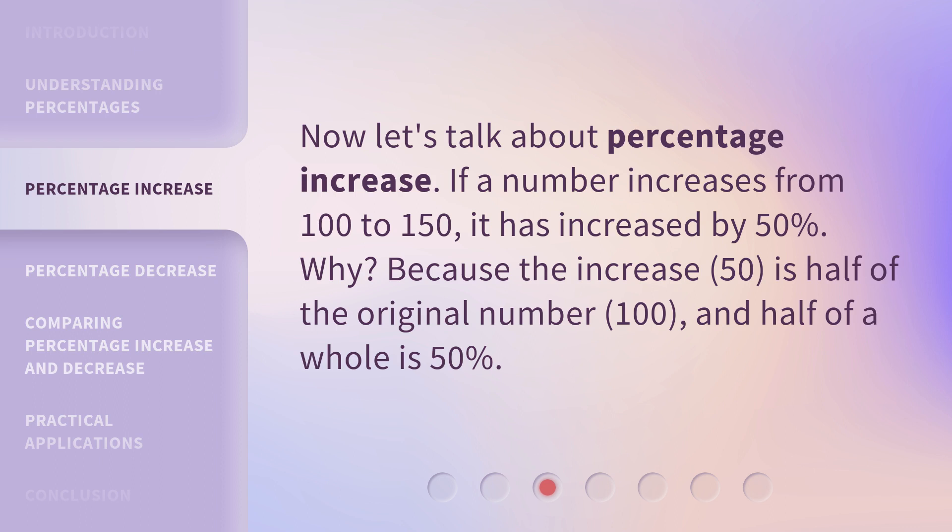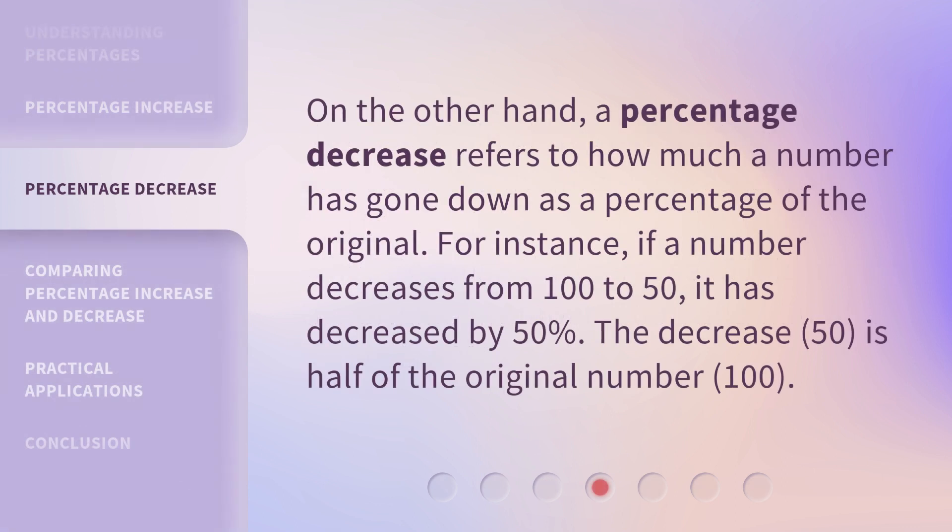And half of a whole is 50%. On the other hand, a percentage decrease refers to how much a number has gone down as a percentage of the original. For instance, if a number decreases from 100 to 50, it has decreased by 50%. The decrease, 50, is half of the original number, 100.